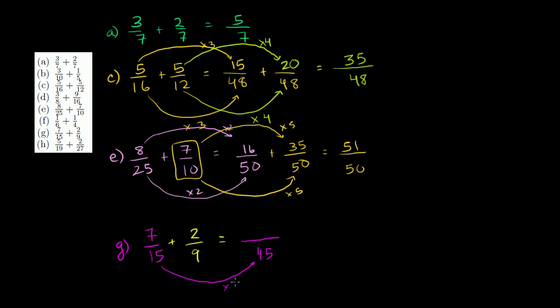15 times 3 is 45. So 7 times 3 is 21. These two fractions are equivalent. Plus, we're going over 45. To get from 9 to 45, we have to multiply times 5. So to get our numerator over here, we have to multiply it times 5. So 2 times 5 is 10. 2/9 is the same thing as 10/45. So now we can add. We're adding fractions of 45. 21 plus 10 is 31. And we are done.